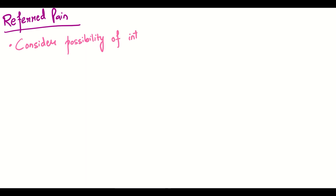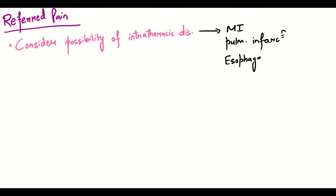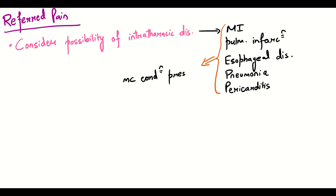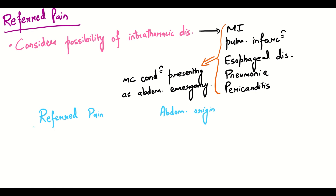Moving on to referred pain, one should always consider the possibility of intrathoracic diseases in abdominal pain, especially if the pain is in the upper abdomen. Intrathoracic diseases include MI, pulmonary infarction, esophageal diseases, pneumonia, and pericarditis, which are the most common conditions presenting as an abdominal emergency. In cases of referred pain, the pain will diminish during the inspiratory phase of respiration.